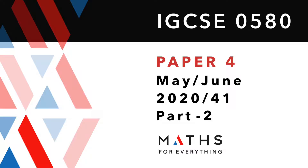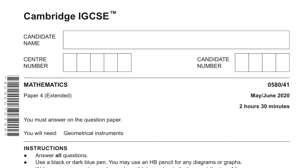Assalamu alaikum, welcome to my channel. Do remember to subscribe to the channel if you have not already done so, and share it with your friends. In this video we are going to solve Cambridge IGCSE Mathematics paper 4, forex standard variant one, May/June 2020, from question number three till seven.